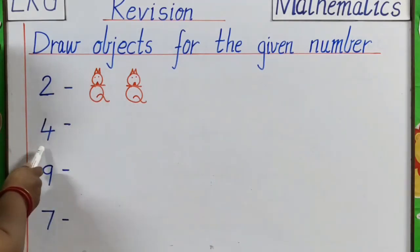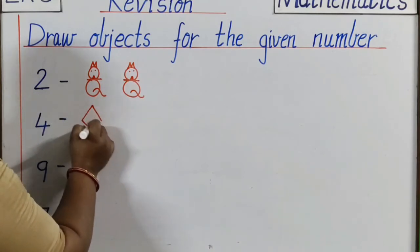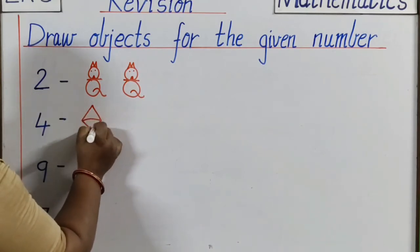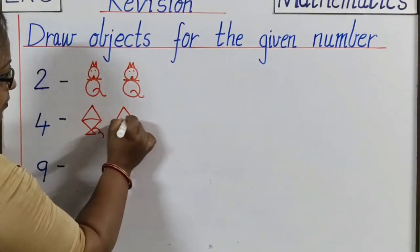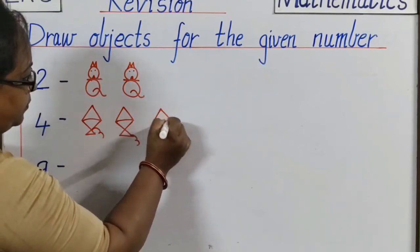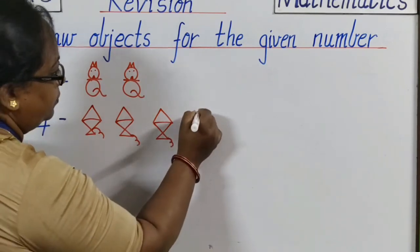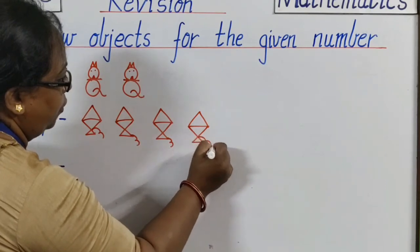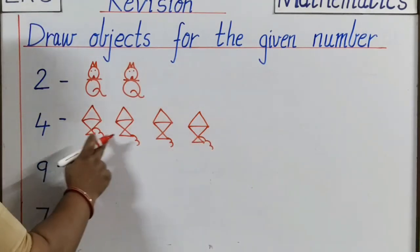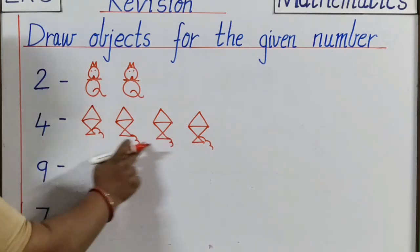Next number is four. What shall we draw here? Let's draw kites. One. Two. Three. And four. Let's check. One, two, three, four. Number four. Four objects.